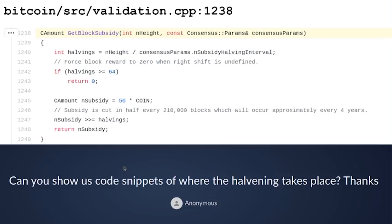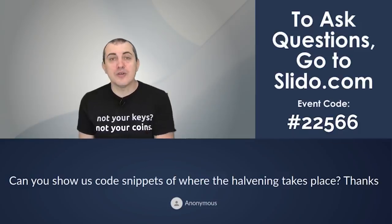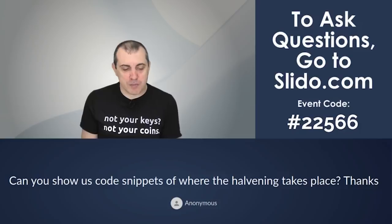Once shifted three times to the right, the number is returned. That number will be 625 million Satoshi, which will be the new subsidy of the block.